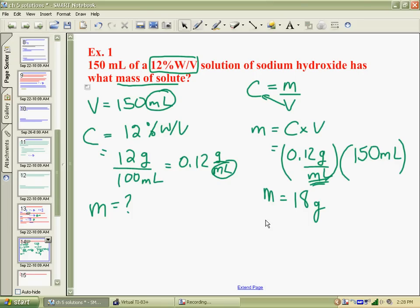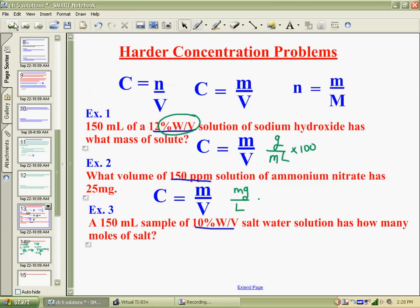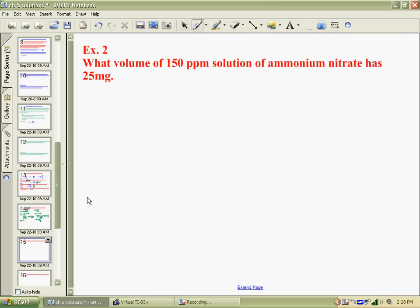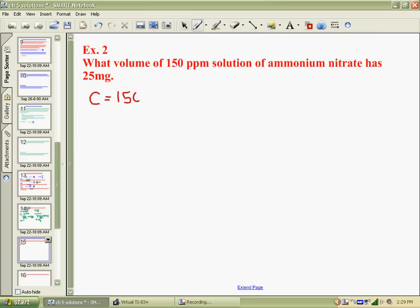So we'll go back and take a look at example number two, which says, what volume of 150 part per million solution, this is our concentration. The concentration is 150 ppm. The question wants to know what volume, so that's your question, has 25 milligrams. That is a mass. Well, before I start thinking about whether I have to change my mass of milligrams to grams, we need to consider what the ppm is. That is 150 milligrams per liter. So that indicates to me that I see milligrams here, milligrams there. I'm going to be able to use those two concepts together without having to convert any units.